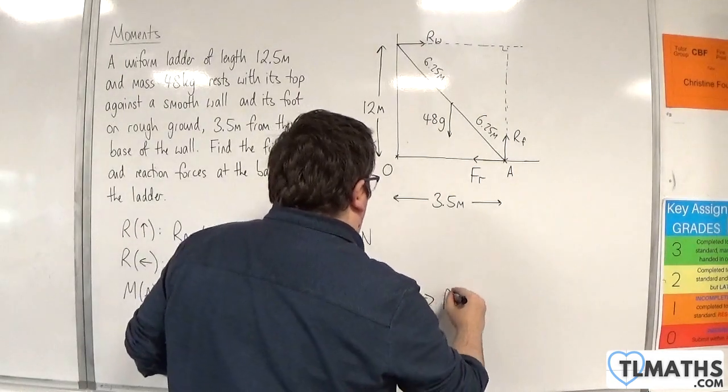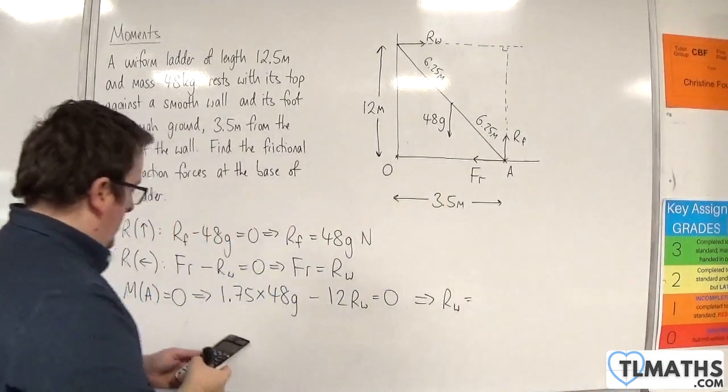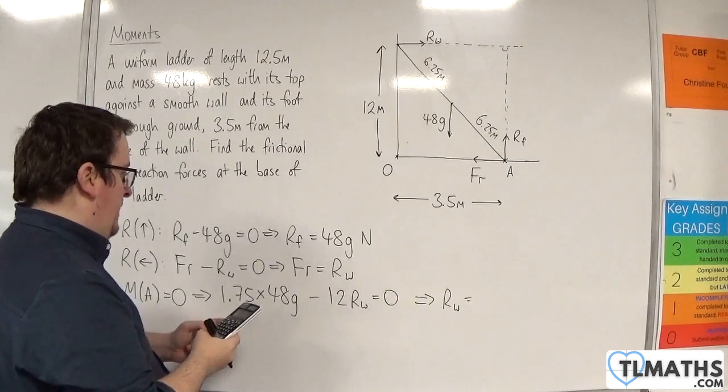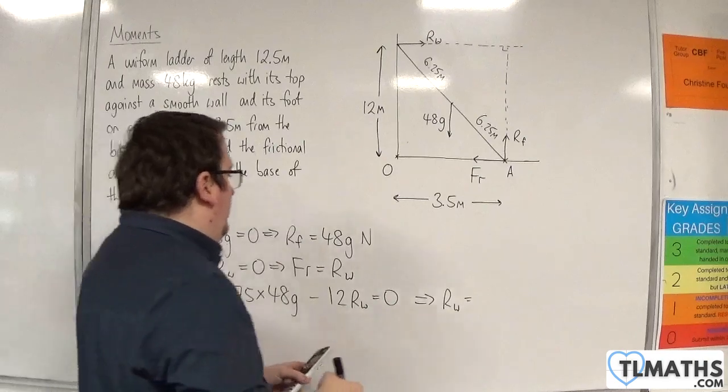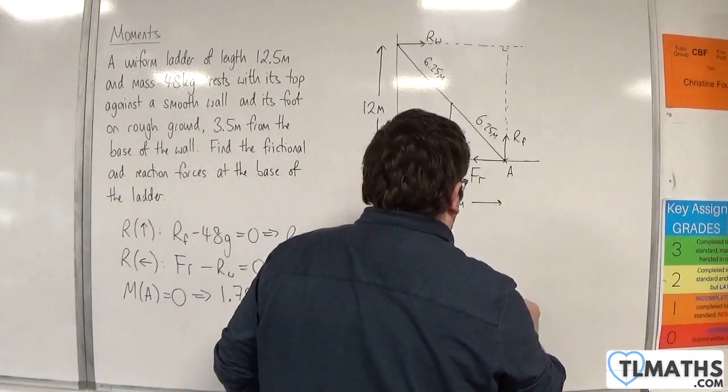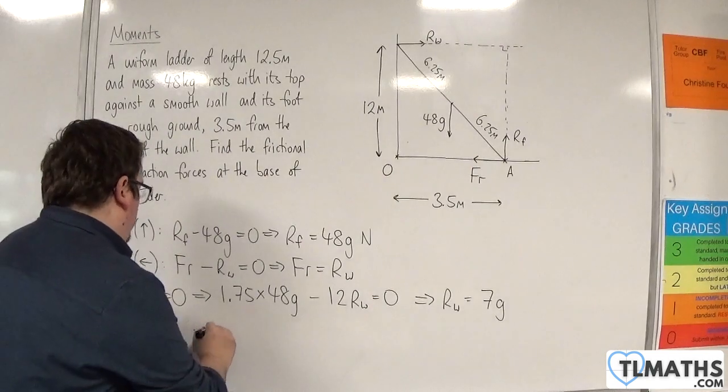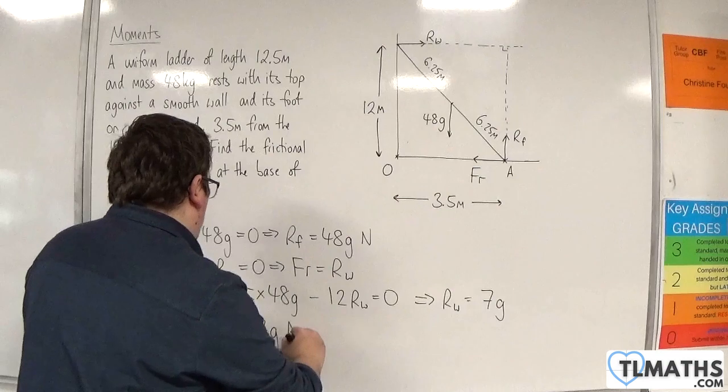So that implies that RW is 1.75 times by 48, and divide that by 12, and that would be 7G. So therefore, the friction must be 7G Newtons.